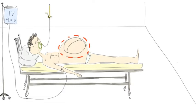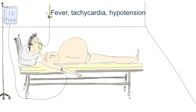This is due to the large gas-filled loop of sigmoid lying just beneath the anterior abdominal wall. Other signs that should ring alarm bells include the presence of fever, tachycardia, and hypotension.